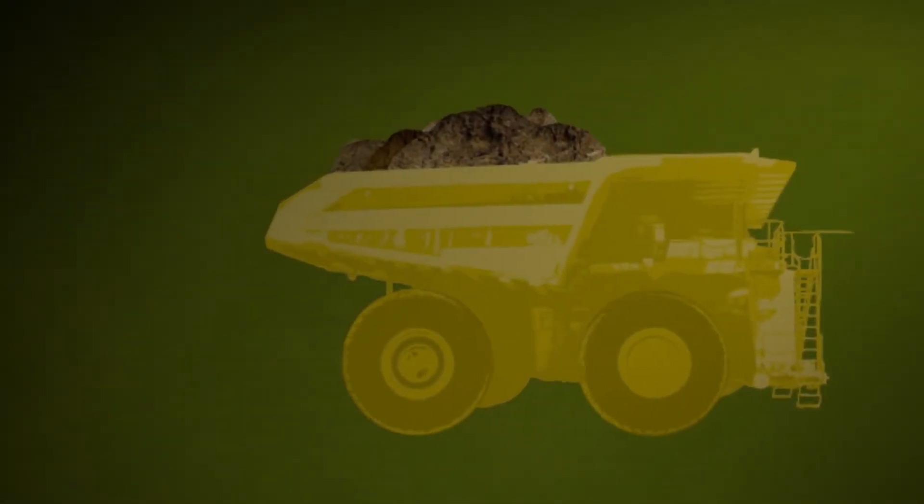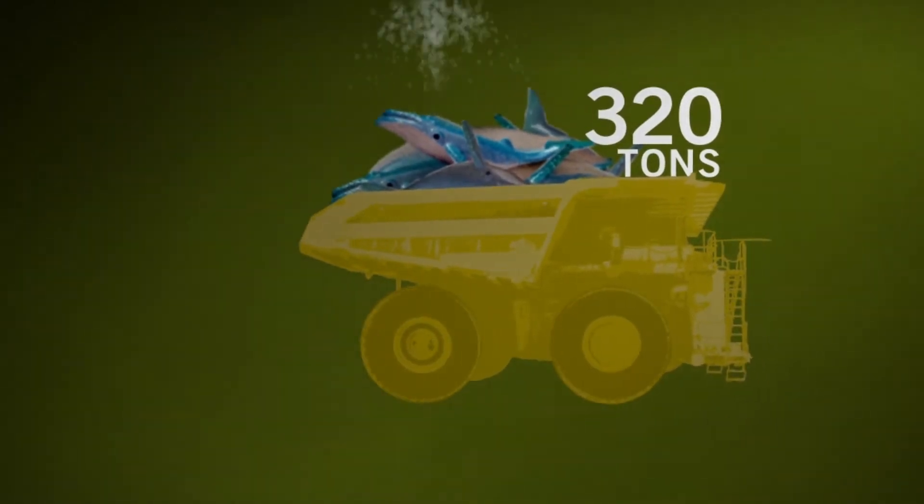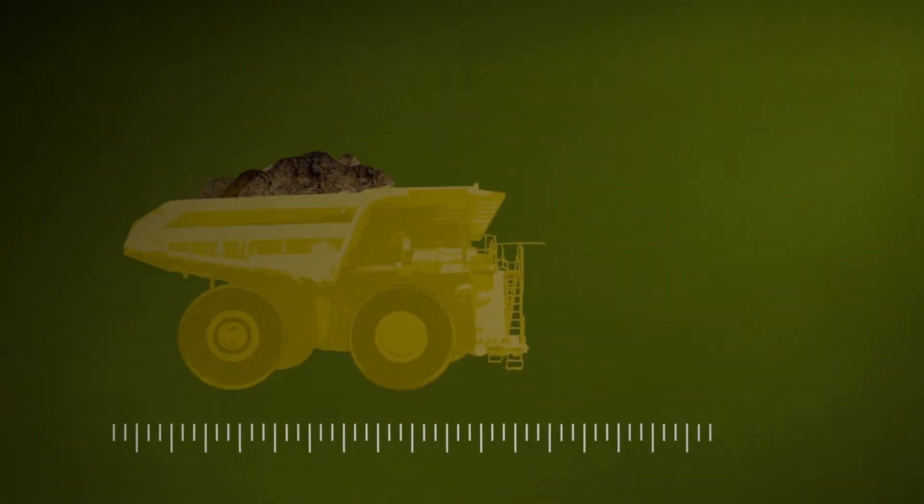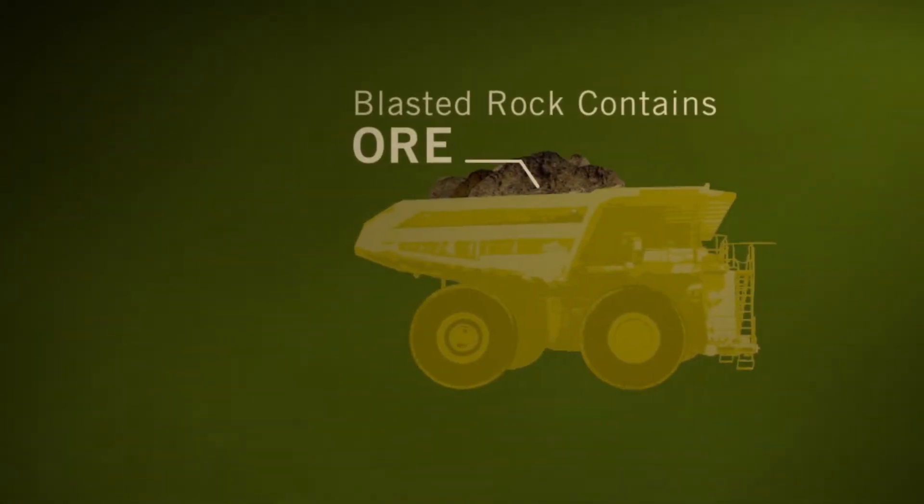These trucks are capable of hauling 320 tons, or about six whales, and are about the same size as an average two-story house. These huge hauling machines carry the blasted rock, which contains minerals called ore, out of the mine and drop it into one of the world's largest rock crushers.